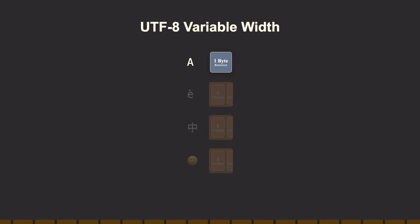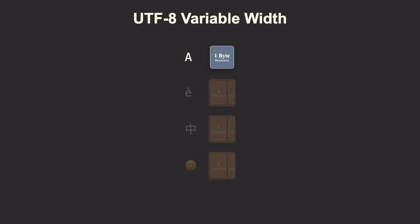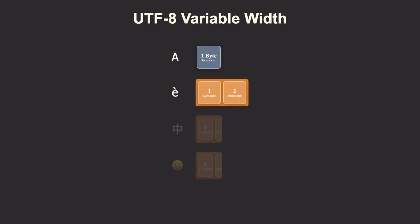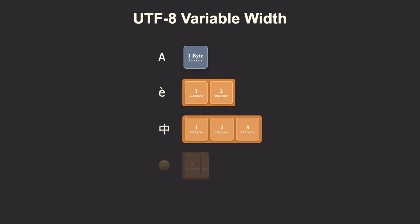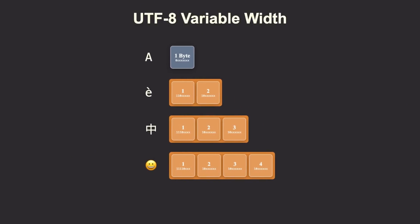UTF-8 is the brilliant shipping method for Unicode's catalog. It's variable width, like an accordion that expands only when needed. English A takes one byte — same as ASCII. French À takes two bytes. Chinese 中 takes three bytes. Emoji takes four bytes. This answers the big question: why does À take more space than E? Because E fits in the original ASCII range — one byte. But À needs two bytes to store its Unicode number, 232.